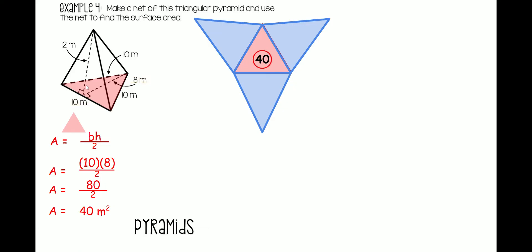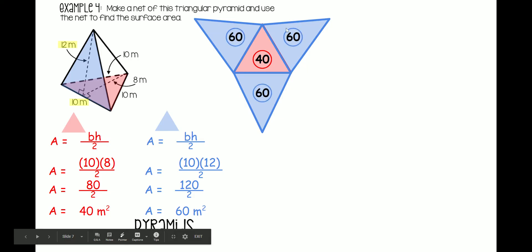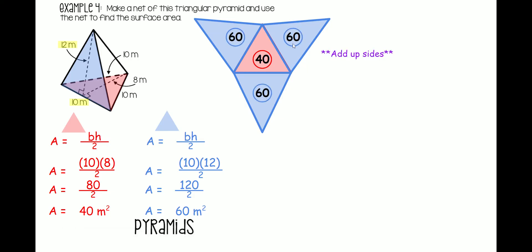Now let's find the triangular sides. Area equals base times height divided by 2. The base of this triangle is 10 meters, so replace b with 10. The height is this segment right here — 12 meters — so replace h with 12, divided by 2. 10 times 12 is 120, divided by 2 is 60 meters squared. Write 60 in all three of those sides. Now we add up: 40 for the base plus 60 plus 60 plus 60 gives you 220 meters squared. That's our final answer.